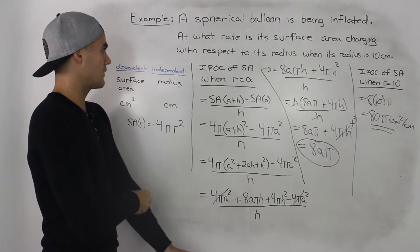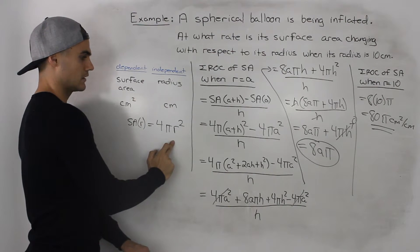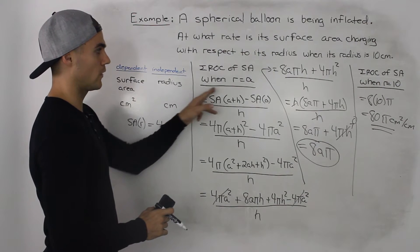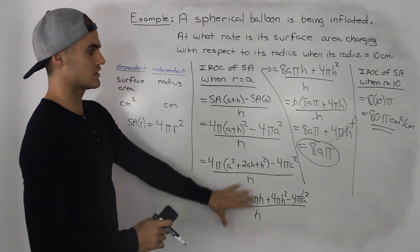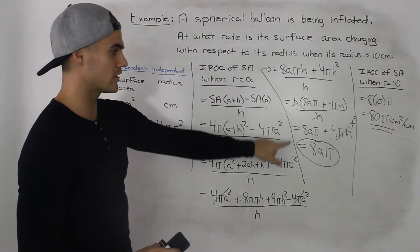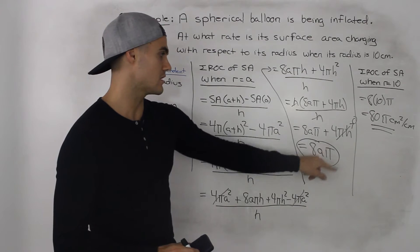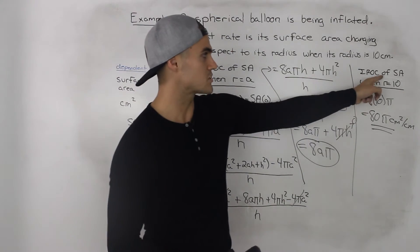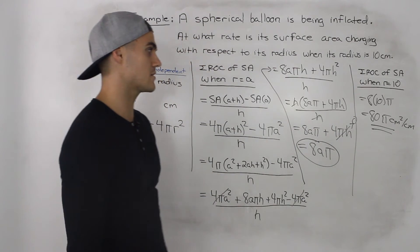So as a recap what we did: found out the dependent independent variable, related them in an equation. Then we found out the instantaneous rate of change when the radius is equal to a general value a by using the difference quotient. Algebraically manipulating it we get 8aπ for the instantaneous rate of change expression. And then plugging in our specific radius of 10 we end up getting 80π centimeters squared per centimeter.